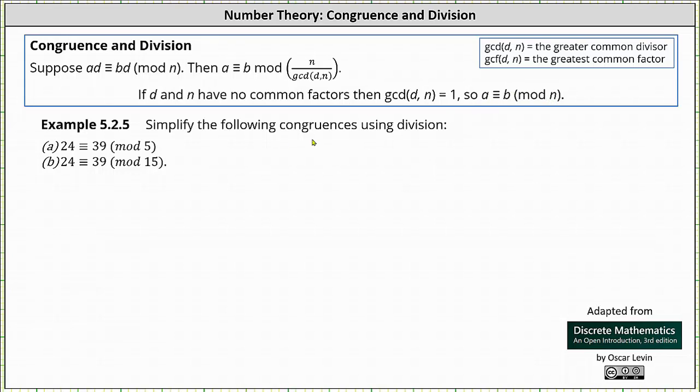Let's take a look at two examples. We're asked to simplify the following congruences using division. First, we have 24 is congruent to 39 mod 5.